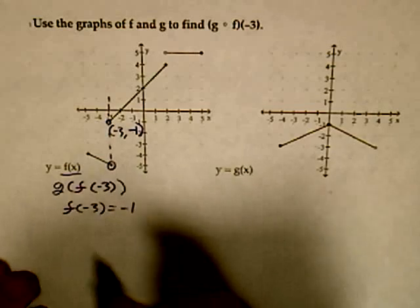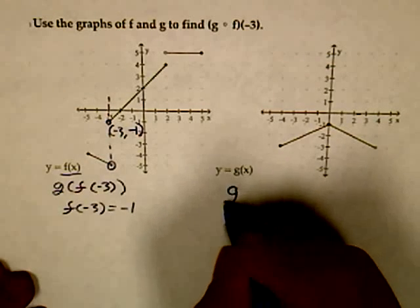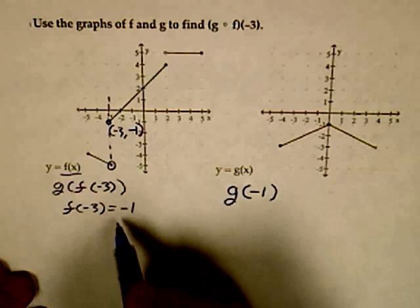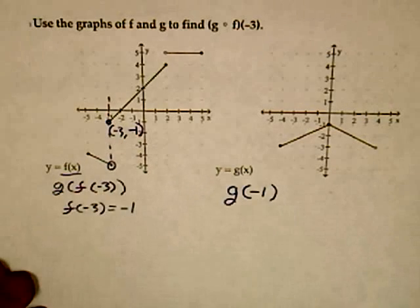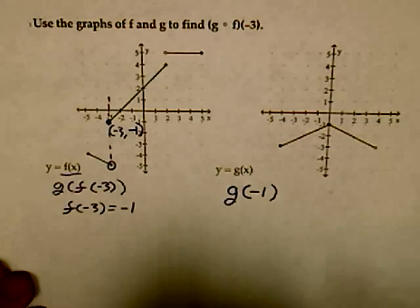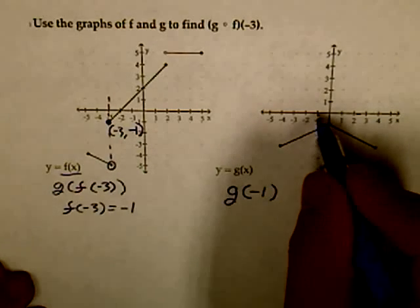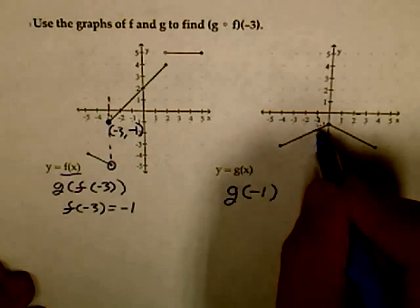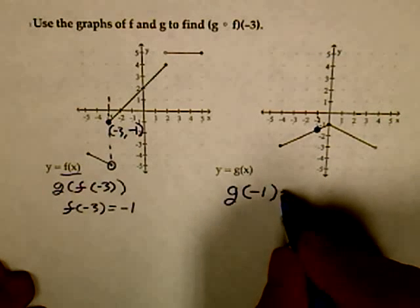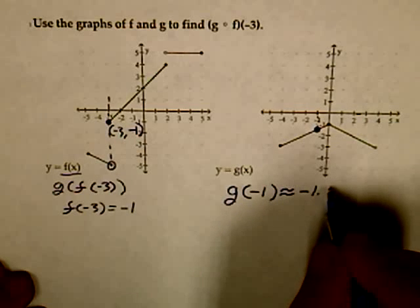With that, I'm now going to use my second graph to locate g of negative 1, because negative 1 is f of negative 3. I will go to the graph g, and plug in negative 1, and come down. It appears like that is approximately negative 1.5.